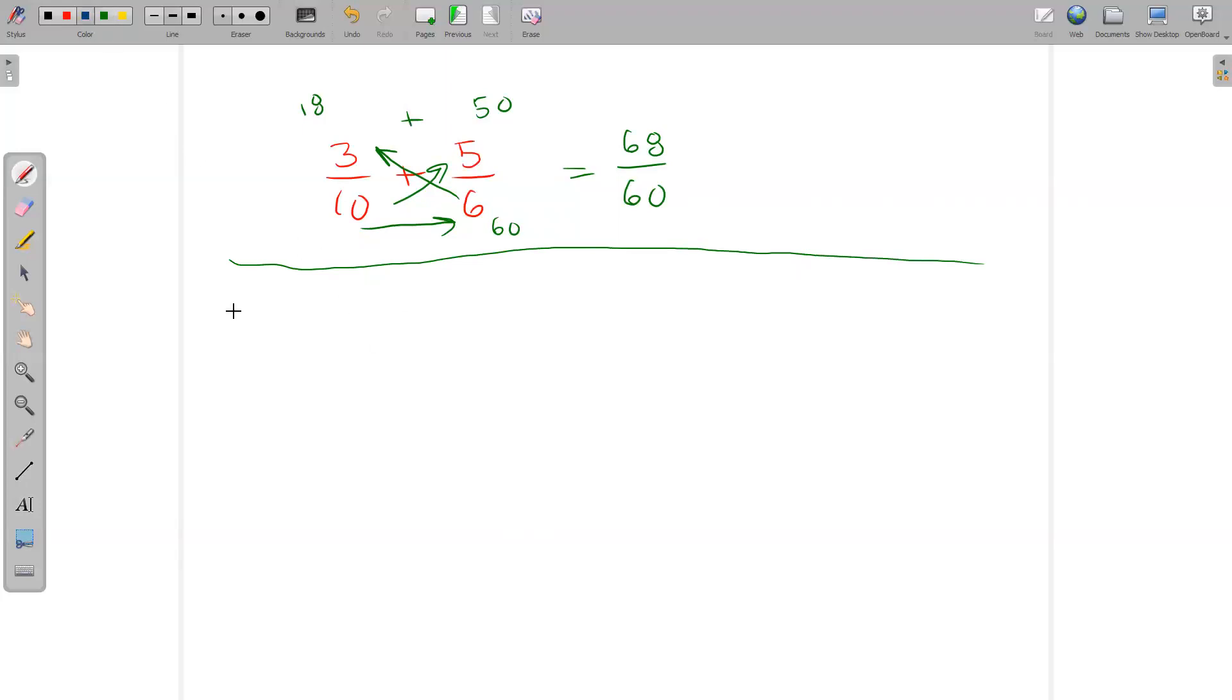If I want to use the LCD algorithm for the three tenths plus five sixths. The first thing I have to do is say, all right, what's the lowest common multiple of 10 and six? And some people just look at that and know it. Others have to do a fair amount of work. So I might do something off to the side. Like, let's see, 10 is two times five. And then six is two times three. So the LCM has to be two times five times three, which is the least number of prime factors I can get away with. What is that? 30.